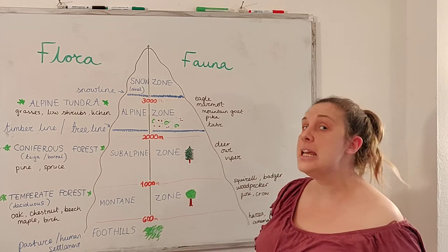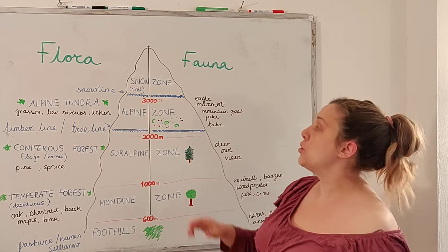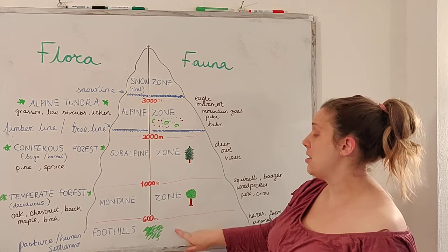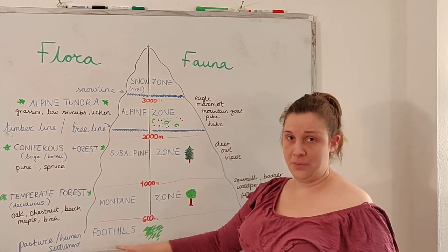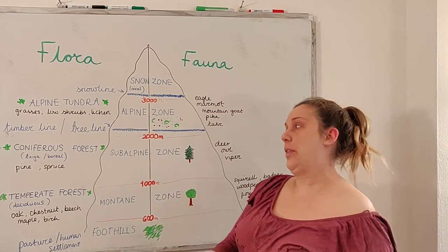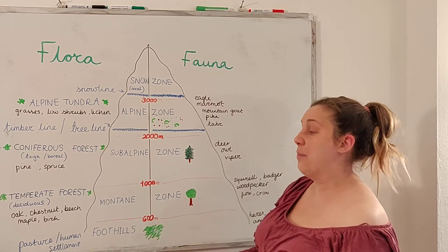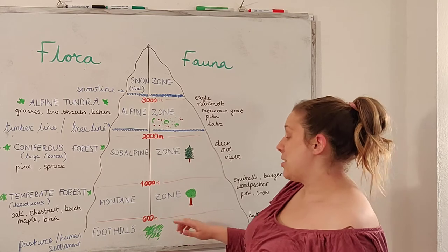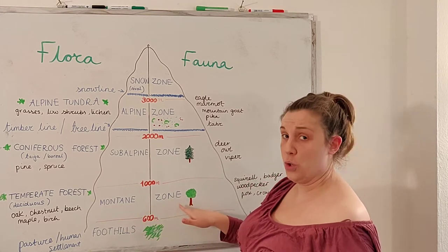They're divided depending on the altitude. So altitude talks about the height from sea level of the mountain. If we start at the bottom, the first zone would be the foothills. Hills are much, much lower than a mountain, and this area would be covered with pasture and grass. The next zone, once we get above 600 metres, is the montane zone.